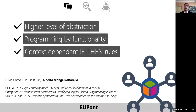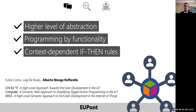We designed EUPont by focusing on three main points. First, our goal was to empower users to program their devices and services with a higher level of abstraction, without being aware of all the technological details needed to define rules. Second, we tried to shift the programming approach from vendor-centric to functionality-centric. So instead of focusing on the specific Nest thermostat, for example, we focused on what a generic thermostat can do, like increasing the temperature of a room or notifying the user when it's cold. And finally, we envisioned context-dependent rules that can be adapted to different contextual situations.